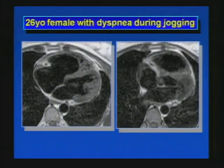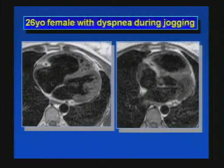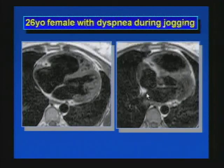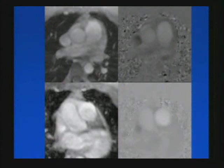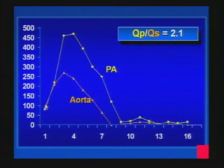Next case: 26-year-old with dyspnea during jogging. The first thing that calls attention is the enlargement of the right ventricle, suggesting a left-to-right shunt. Looking at the atrial septum, we see a defect — this is a secundum type ASD, the most common type, clearly seen on cardiac MRI. MRI can also estimate the systemic to pulmonary flow ratio by measuring blood flow in the ascending aorta and pulmonary artery using velocity-encoded cine imaging. A flow versus time curve shows the pulmonary to systemic flow ratio is 2.1 — a very significant shunt.